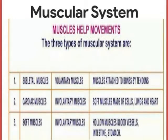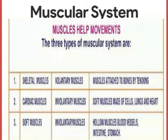The three types of the muscular system are: voluntary muscles, which are attached to bones by tendons; cardiac muscles; involuntary muscles; and smooth muscles, found in hollow organs such as the lungs and heart.